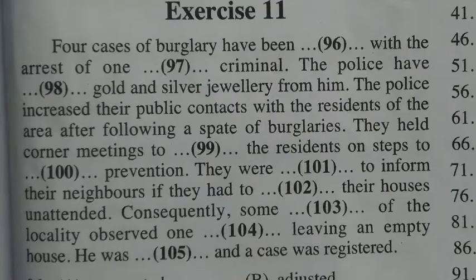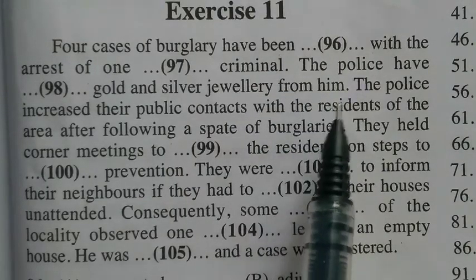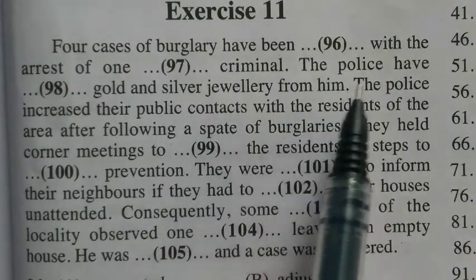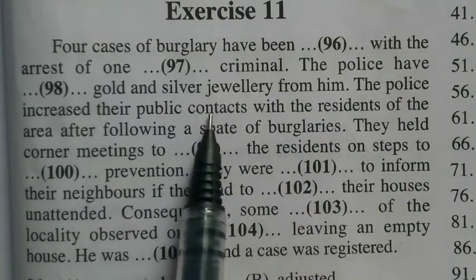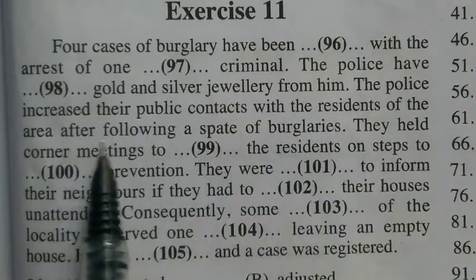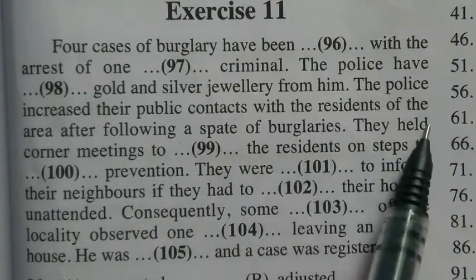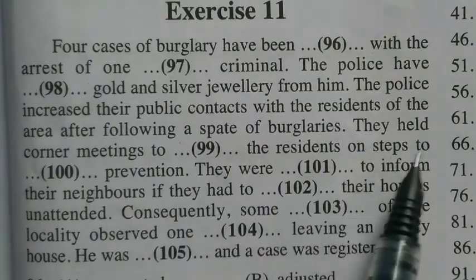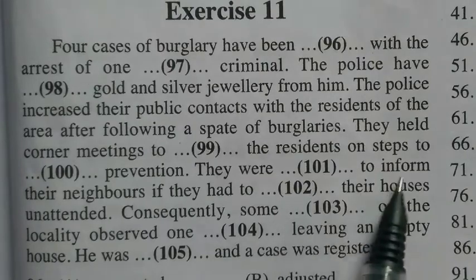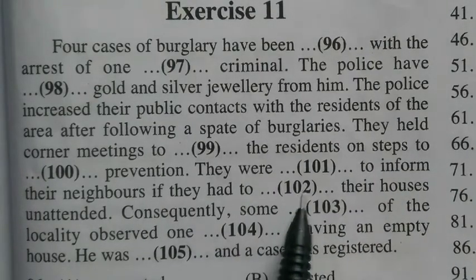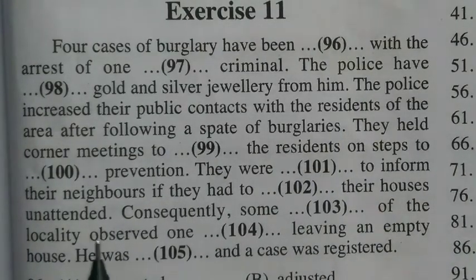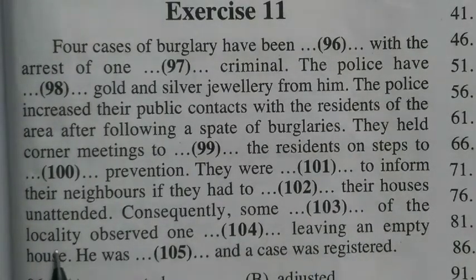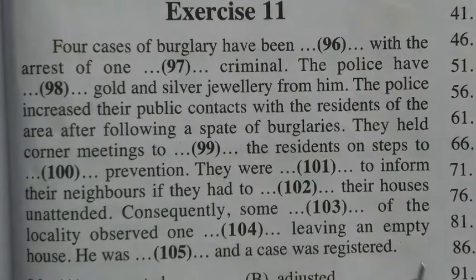Re-reading exercise eleven filled: 'Four cases of burglary have been solved with the arrest of one notorious criminal. The police have recovered gold and silver jewelry from him. The police increased their public contacts with the residents of the area after following a spate of burglaries. They held corner meetings to educate the residents on steps to crime prevention. They were required to inform their neighbors if they had to leave their houses unattended. Consequently, some residents of the locality observed one stranger leaving an empty house. He was apprehended and the case was registered.'